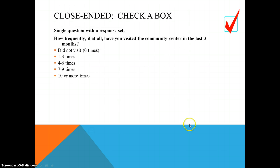Here's an example of a closed-ended question — a very simple response: How many times did you visit the community center? Make sure that the choices don't overlap. In this case the choices were zero, one to three, four to six, seven to nine, or ten or more.